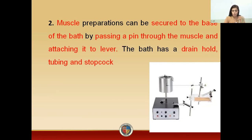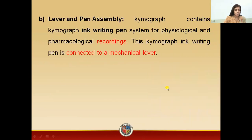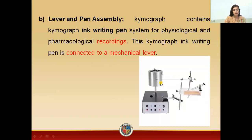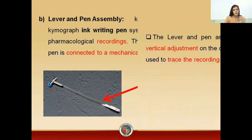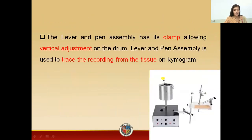To the other side of the organ you attach a thread, and this thread is attached to the lever assembly. This lever assembly has a pen, and this pen rests on the drum which contains the graph. When your muscle moves, this pen will move and record the recordings. This is the lever and the pen assembly — here is the lever, and here is the pen which records the data.